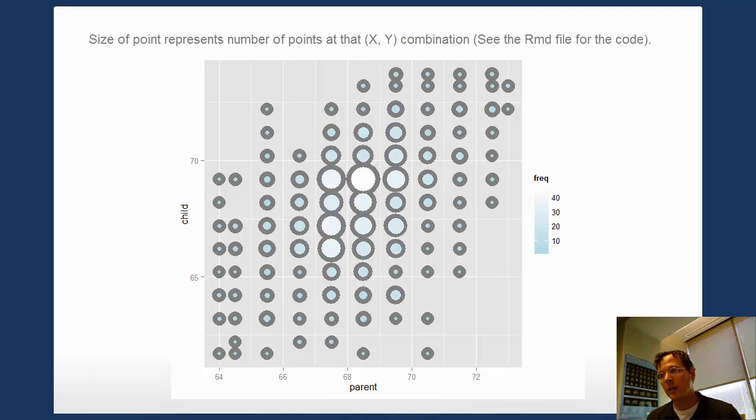Here I give a better plot, where the size of the point represents the number of parent-child combinations at that particular x, y location. The color, a very light color, represents a frequency near 40, and a very bluish or darker color represents a frequency toward 10 or down to one at a specific location.